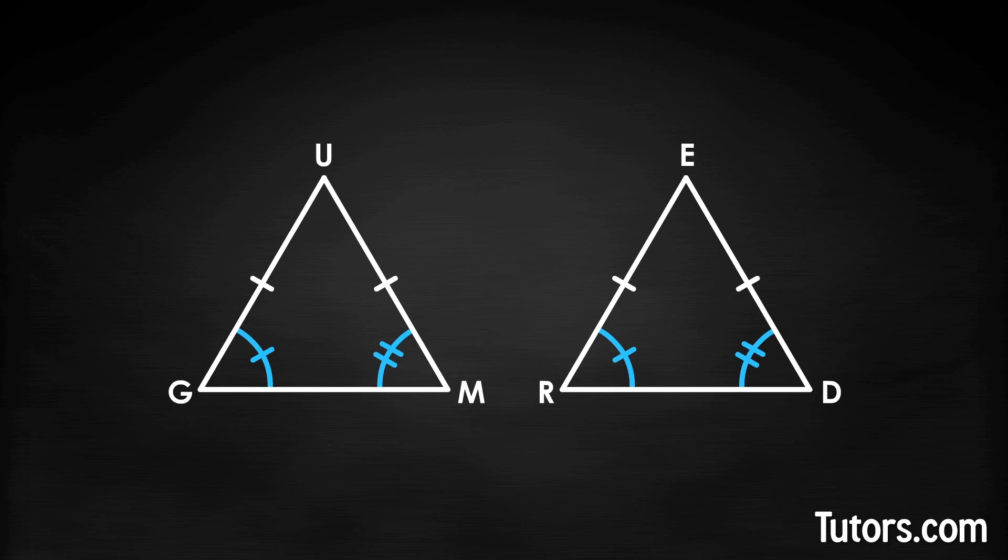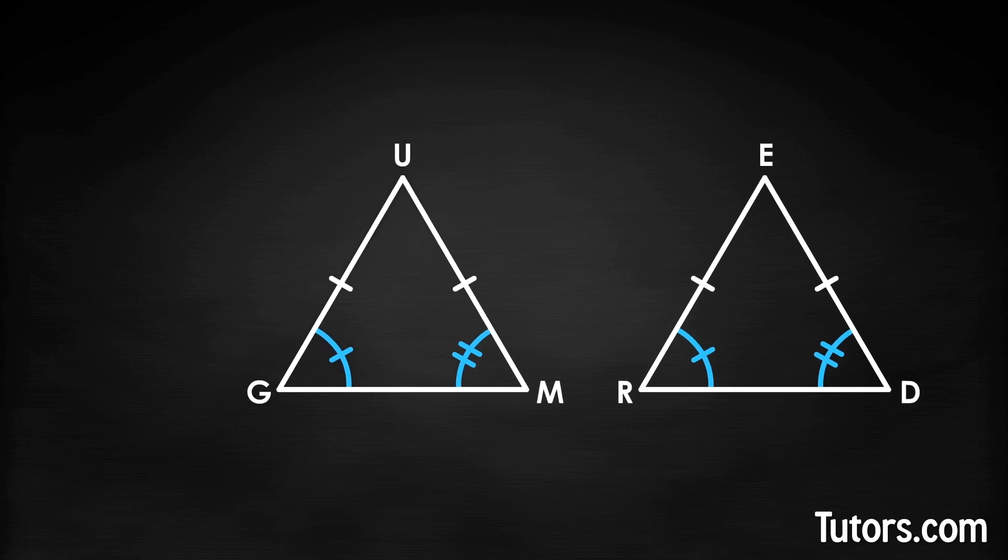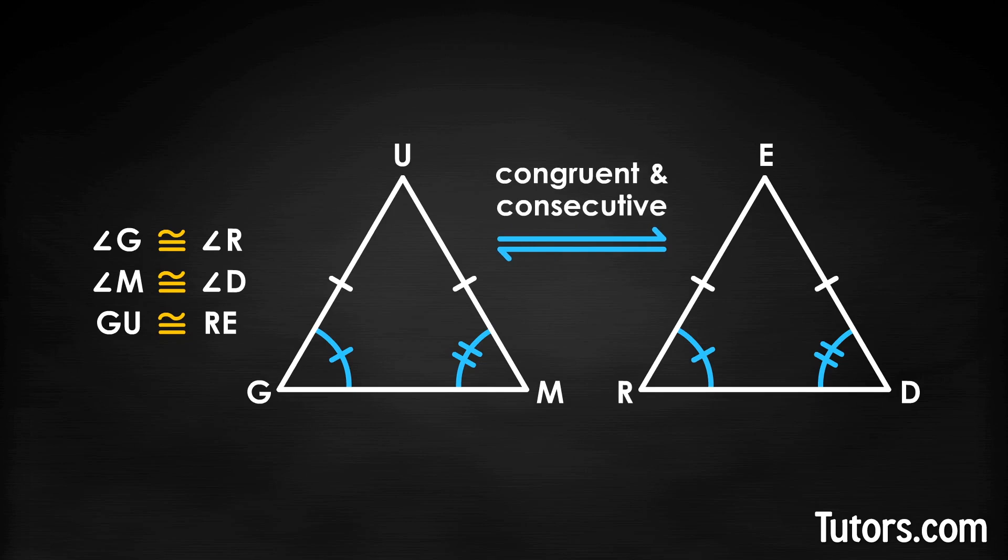As you can see, the congruent parts are angle G is congruent to angle R, angle M is congruent to angle D, and side GU is congruent to side RE. We know from looking at these triangles that two interior angles are congruent and consecutive, meaning they are next to each other, but we know nothing about the side between them. Instead, we know that another side is congruent.